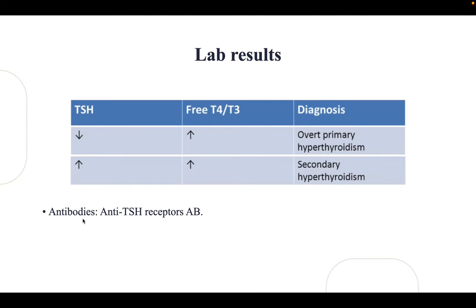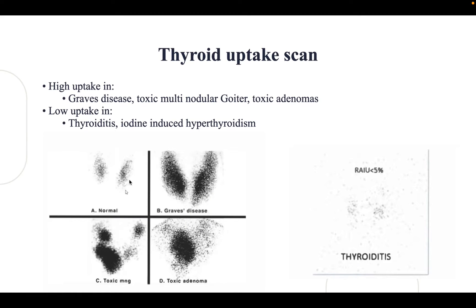Some diseases have anti-thyroid stimulating hormone receptor antibodies. For the thyroid uptake scan: high uptake is seen in Graves' disease, and in toxic multinodular goiter with a patchy pattern, and in toxic adenoma on one side only. Low uptake is seen in thyroiditis and iodine-induced hyperthyroidism.